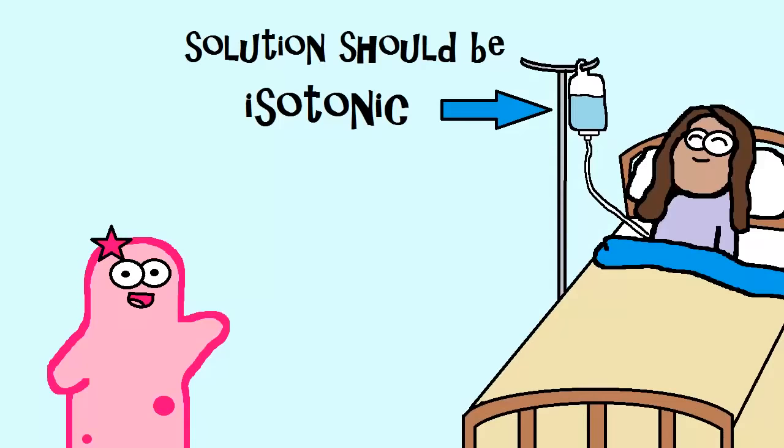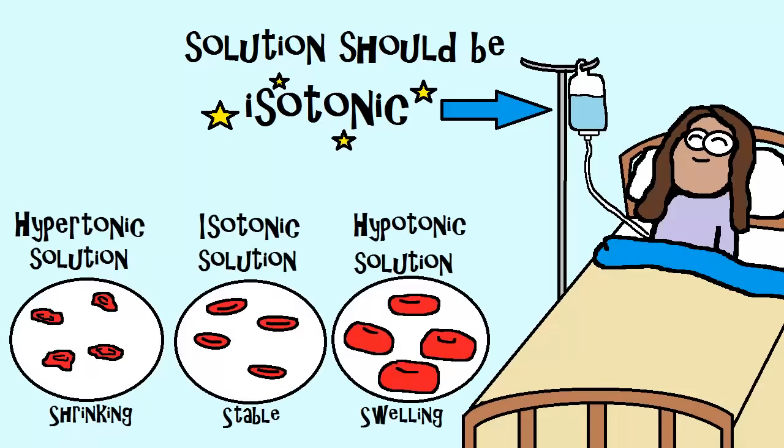If a person needs fluids, they typically receive a solution that is isotonic to their blood plasma. Isotonic means equal concentration. So you wouldn't have any swelling or shrinking red blood cells. And that's a good thing.